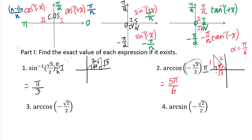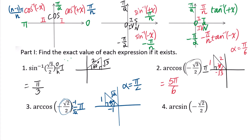Question 3: arc cosine of negative square root of 2 over 2. Negative means the answer is in the second quadrant. Change negative square root of 2 over 2 into negative 1 over square root of 2. Cosine equals adjacent over hypotenuse — negative 1 over square root of 2 — giving 45 degrees, so the reference angle is pi over 4. Applying (n minus 1) pi over n, the answer is 3 pi over 4.